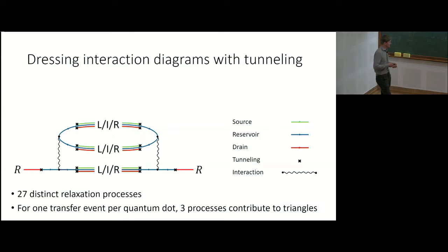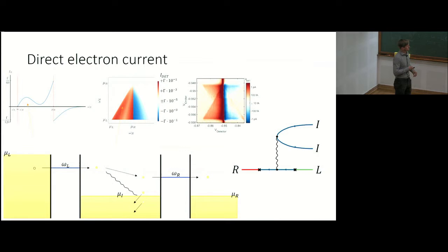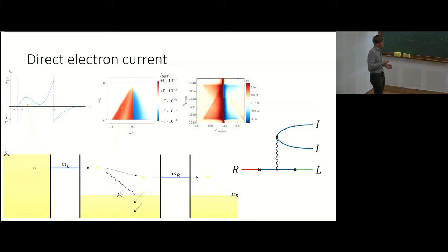If I divide those diagrams in the middle, the physical process is revealed — the other half gives the complex conjugate, since we are dealing with probabilities. Within my approximation only three processes contribute in those triangles. In the first process, the electron comes from the source, tunnels into the intermediate region, interacts with electrons there, and then tunnels out to the right quantum dot. In the energy landscape: the electron comes in, loses some of its energy, escapes through the detector at a lower energy while an electron-hole pair is created. Calculated at zero temperature and for sharp filters, this diagram contributes exactly to the lower-left triangle.